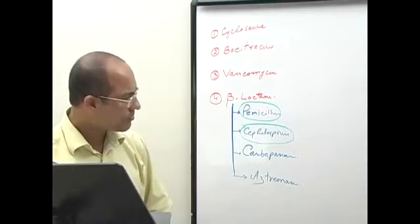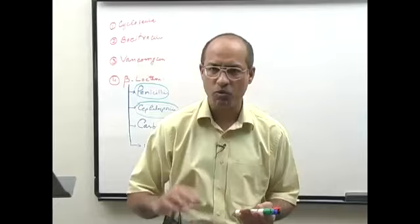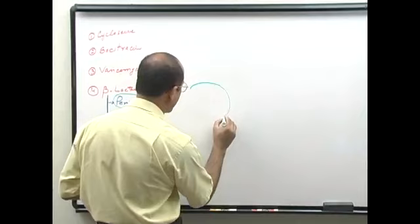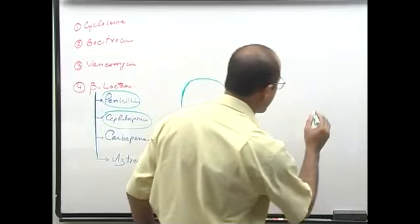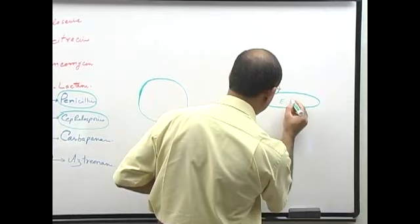Most bacteria are divided into two groups: gram positive and gram negative. As an example of gram positive bacteria, we put staphylococcus, and as gram negative bacteria we put pseudomonas or E. coli.